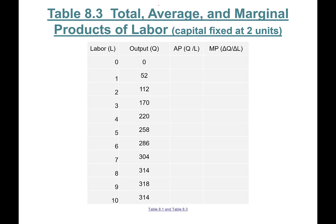This table shows total, average, and marginal products of labor. We have zero through ten workers. One worker produces 52 units, two workers together produce 112, three workers produce 170, and four workers produce 220. It's your job to fill out this table. I'll show you a couple of examples first, then I recommend you pause the video and calculate all these values. For the zero workers row, we can't divide zero by zero, so we put a dash.